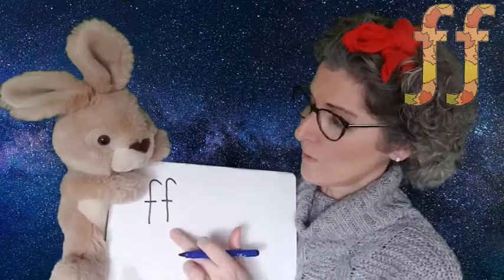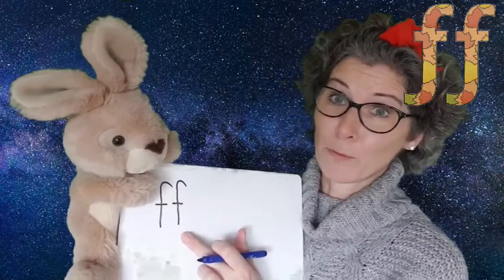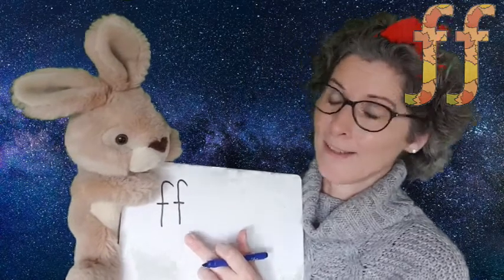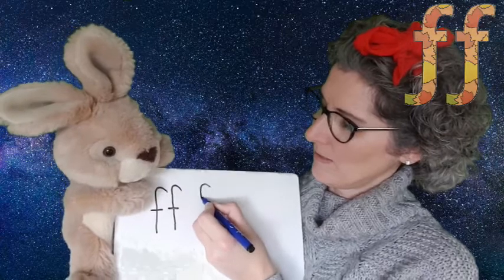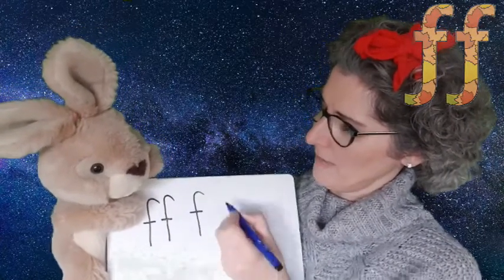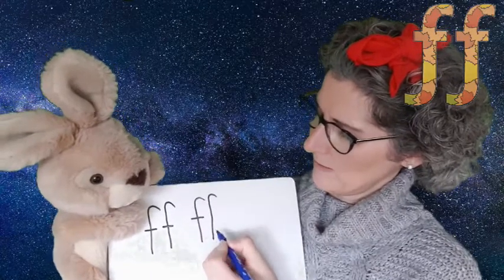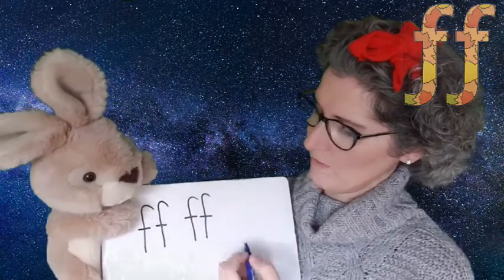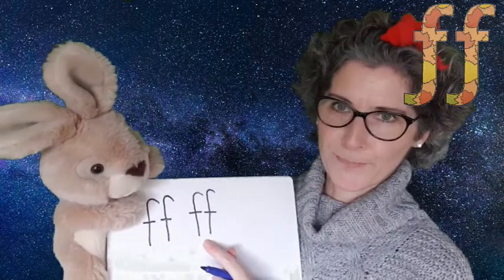Now we use this one mainly at the end of a word or in the middle of a word, not at the beginning — okay, so that's the clue to help us. Let's have one more go at writing this: straight down, lift up and across, and one right next to it and a line across. So keep practicing writing that one down. As we said, ff goes in the middle or at the end of a word, so let's see if we can think of some words with ff as a digraph.